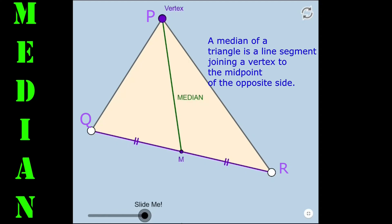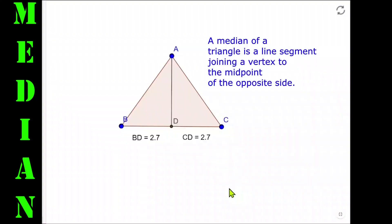PM is one of the medians of the triangle. In this new figure, in triangle ABC, we have AD as one of the medians. You can see here clearly that D is the midpoint because BD and CD are both 2.7 centimeters long. Now let's drag one of the vertices to see how it affects the figure.